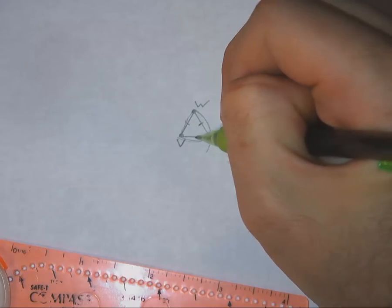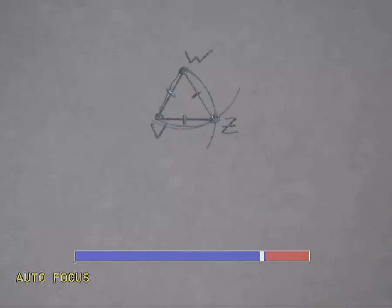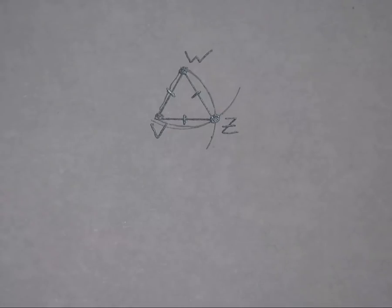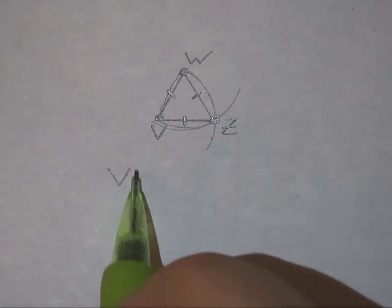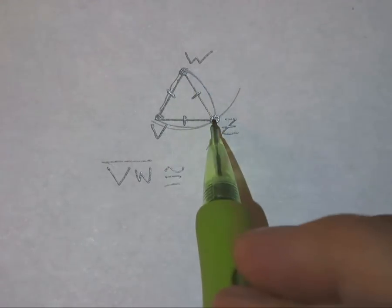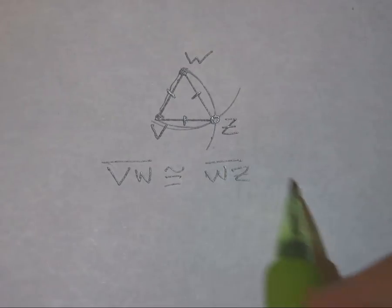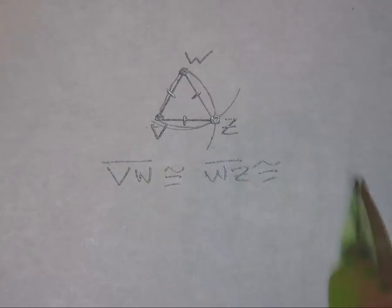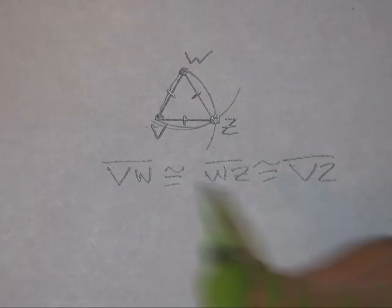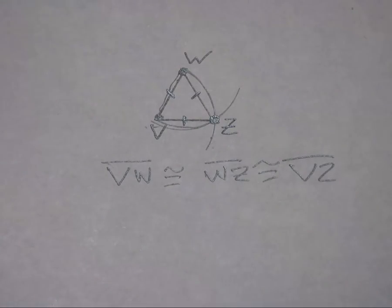This segment is congruent to this one, and this one because they are all the radius, the same radius of the same circle. I'm going to zoom in on that just a little bit so you can see that. There we go. And the notation for that is going to look like this: VW, that's this one right here. That line segment is going to be congruent to WZ. And that is also going to be congruent to VZ. Okay, all those side lengths are the same, therefore this triangle is equilateral. And that's how we draw equilateral triangles.